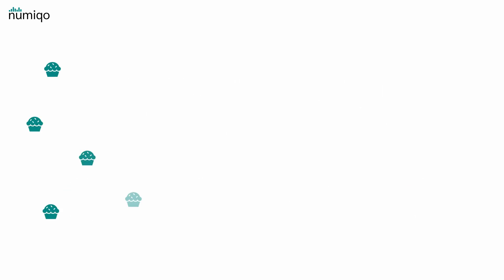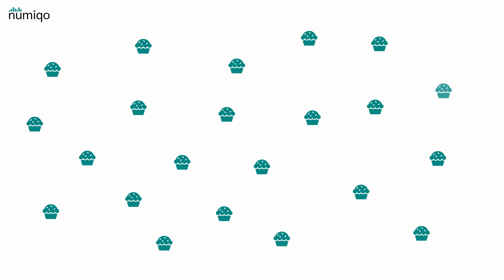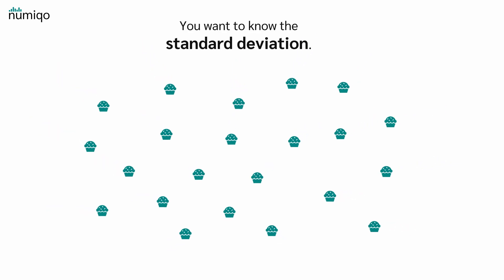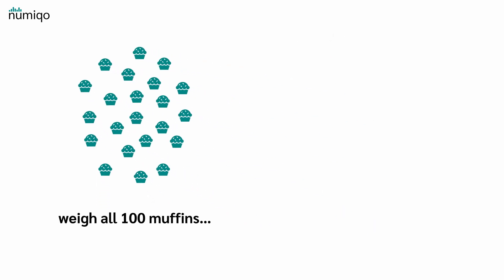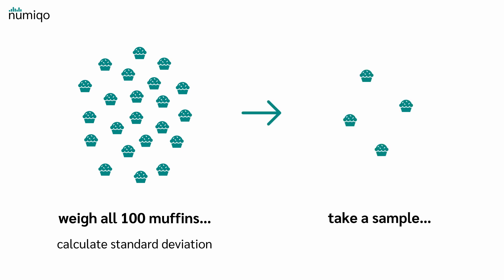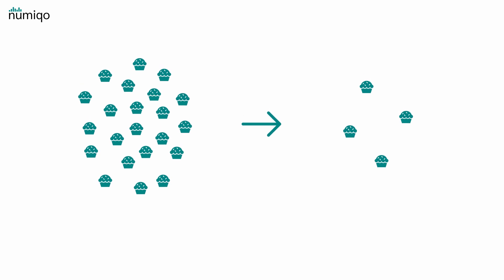Imagine you baked 100 muffins for a wedding and you want to know how much the weights of the muffins vary — so you want to know the standard deviation. Now you have two options. You can either weigh all 100 muffins and calculate the standard deviation, or you take a sample and use it to estimate the standard deviation of all 100 muffins. In statistical terms, the 100 muffins are your population and the few muffins you pick out are your sample.